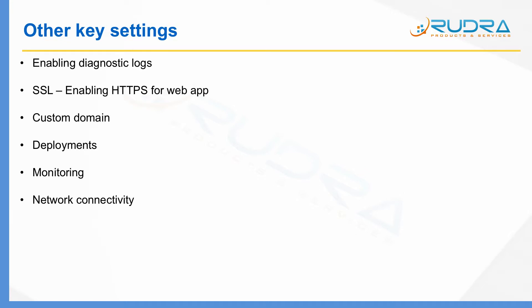The next thing is custom domain. You can have your own custom domain for your web app, and I'm going to show you in this section of the course in subsequent labs how to map a custom domain to your app service. The fourth one is deployment slots — there are a number of ways you can deploy web applications, API apps, or mobile backend services into Azure. I'm going to take you through them in the next section. And the fifth one is monitoring — there are some basic monitoring options and different types of metrics provided by Azure at different levels.